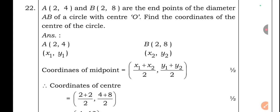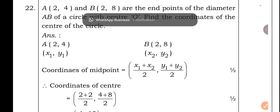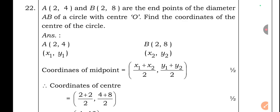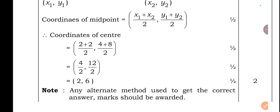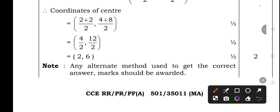Question 22: Points A(2, 4) and B(2, 8) are the endpoints of diameter AB of a circle with center O. Find the coordinates of the center. Using the midpoint formula: center = ((x₁+x₂)/2, (y₁+y₂)/2) = ((2+2)/2, (4+8)/2) = (4/2, 12/2) = (2, 6). Any alternate method used to get the correct answer should be awarded marks.